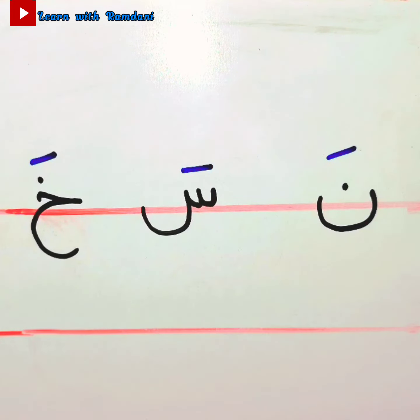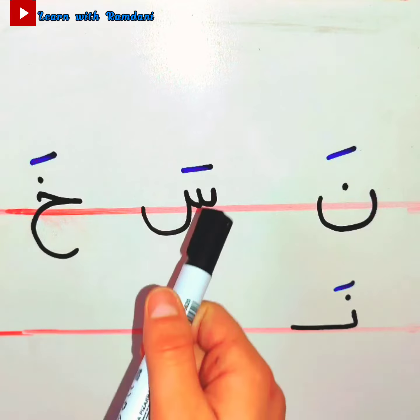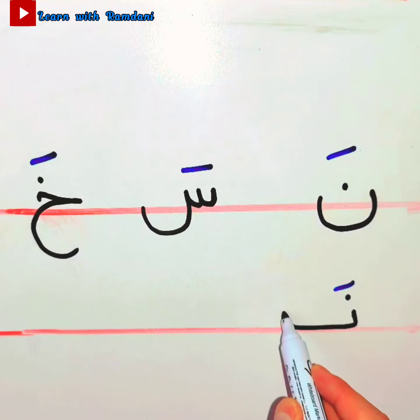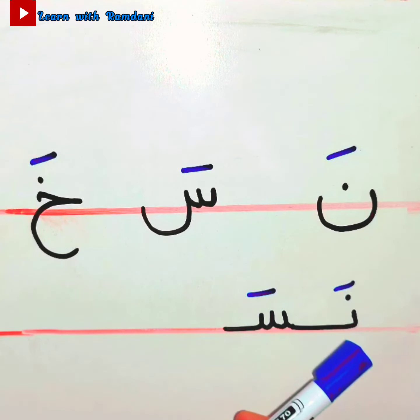Khaa, very good job. Now we'll try to connect those letters together. Let's start with the first one, the letter Noon. We'll put fatha: Na, na. And then the letter Sin. We'll put fatha: Sa. Nasa, nasa, na-sa, nasa.